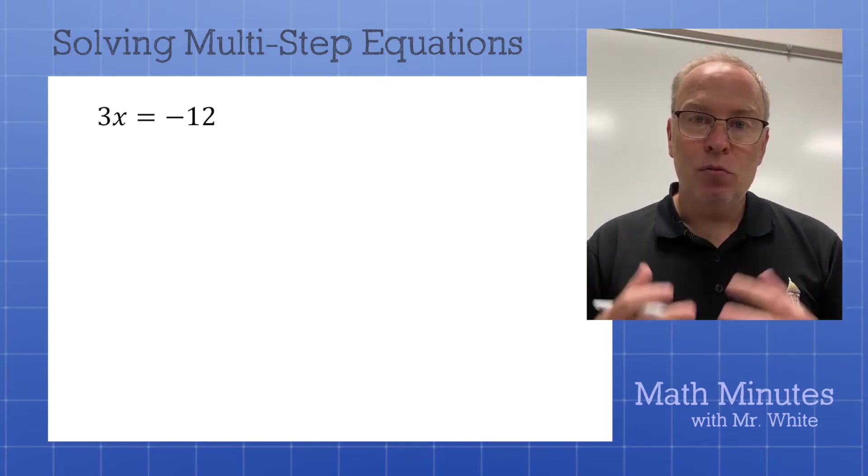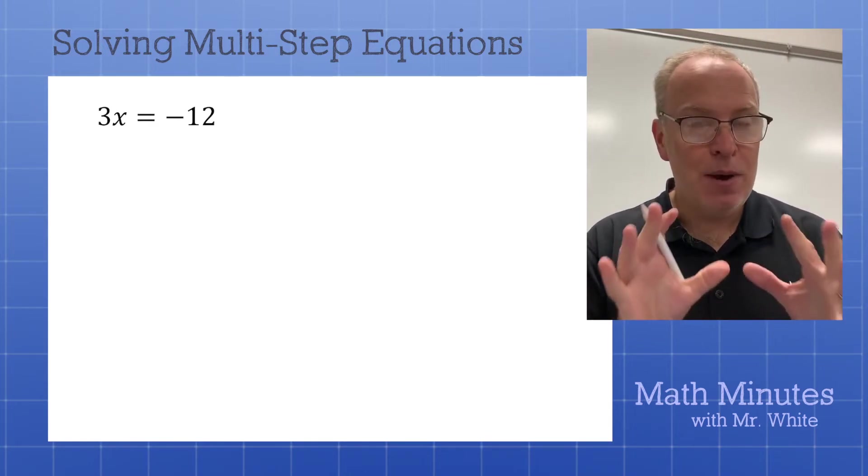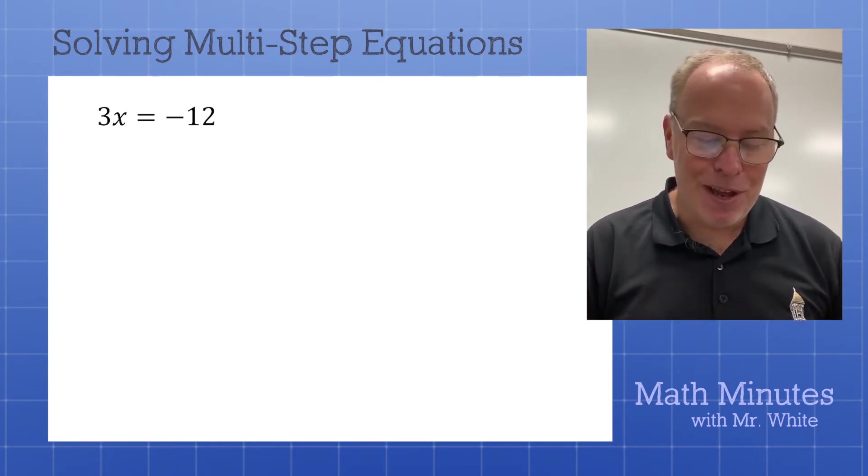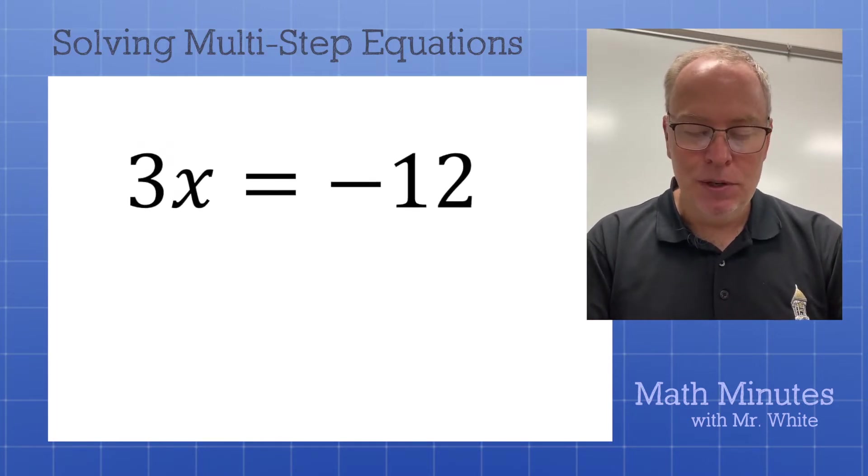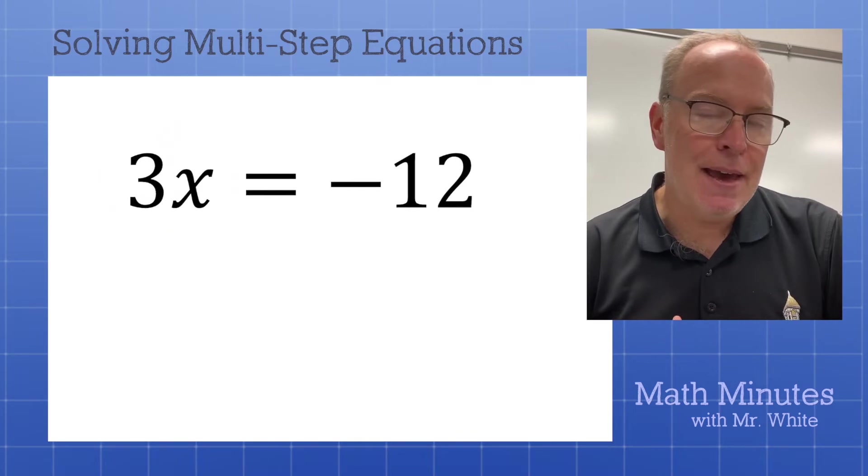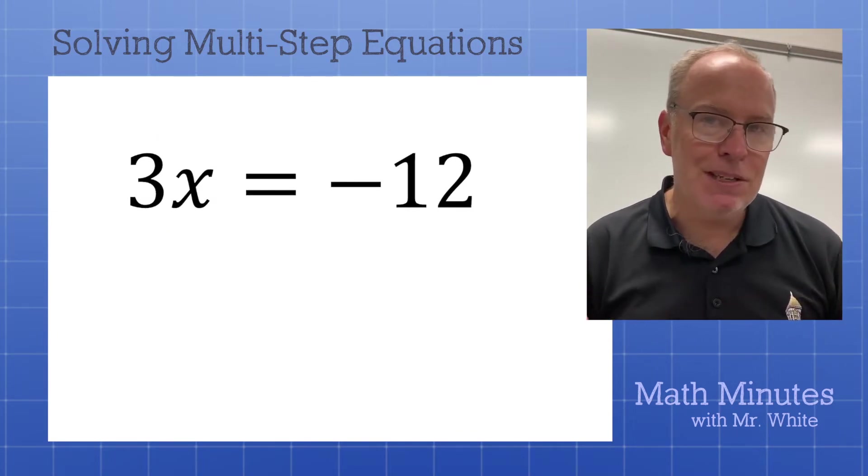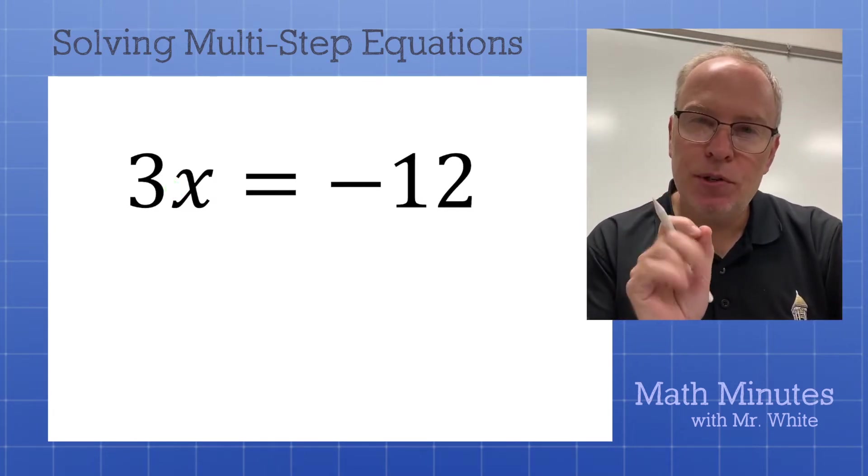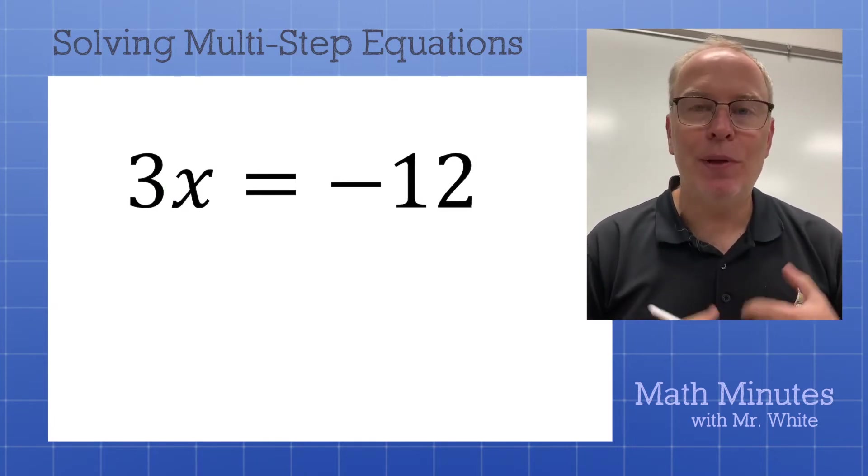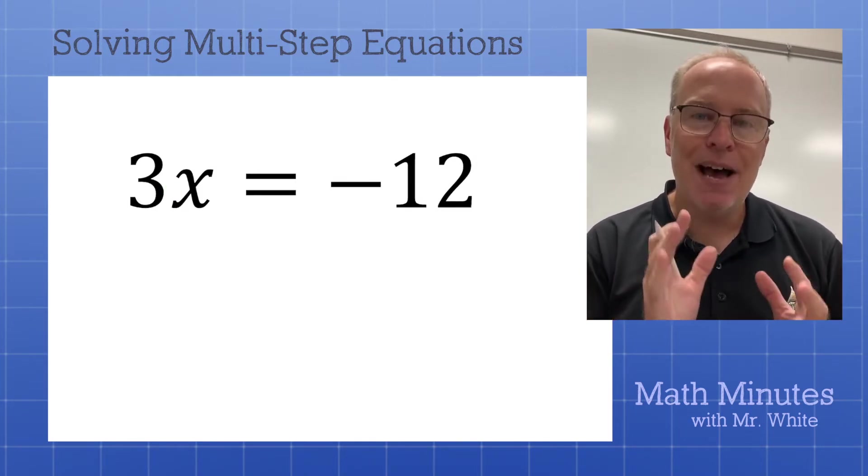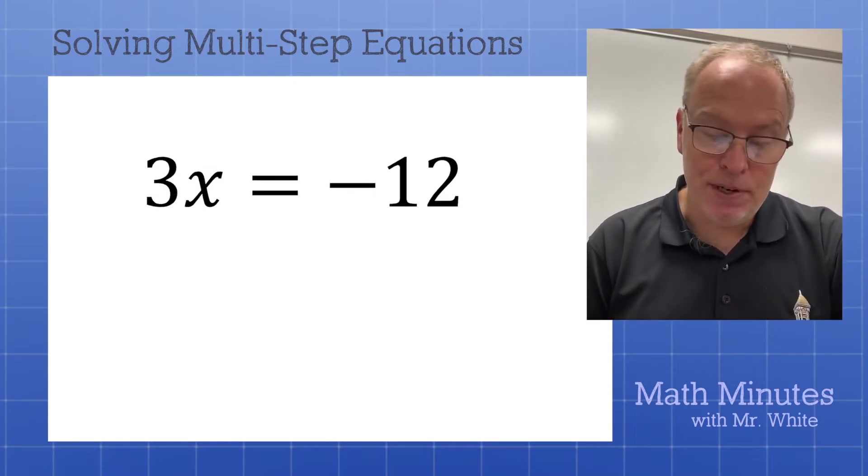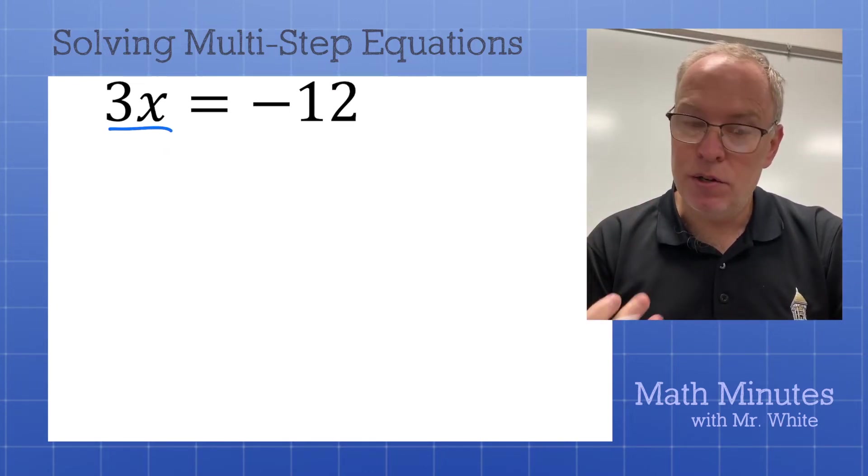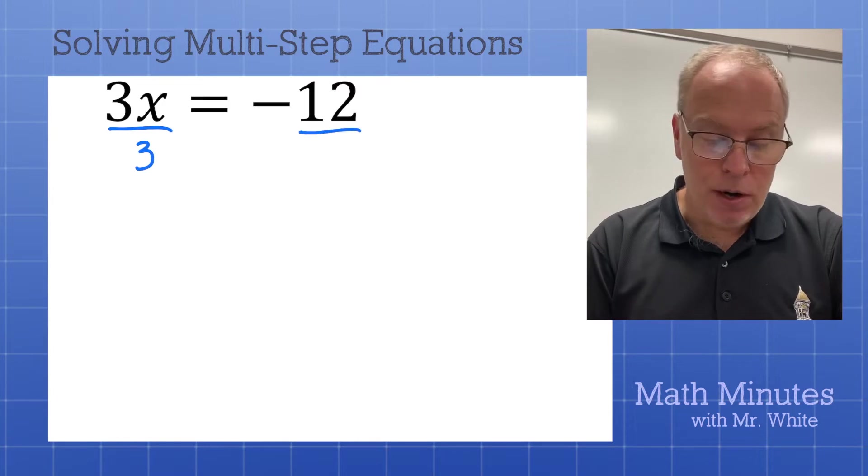Next up, we've got 3x equals negative 12. I do have a lot of students who try to tell me what to do on both sides, and they often get this one wrong. So let me zoom in here and remind you what's going on between the 3 and the x. Is it 3 times x, 3 divided by x, 3 plus x, or 3 minus x? Which operation? It is times. Whenever you see a coefficient, a number right in front of a variable, it is 3 times x in this example.